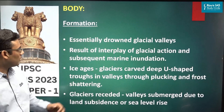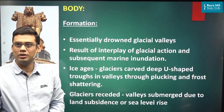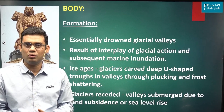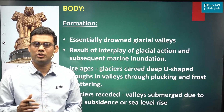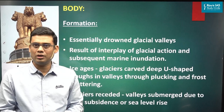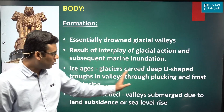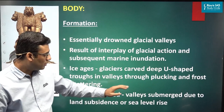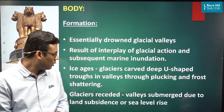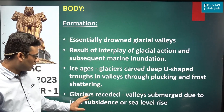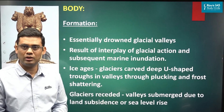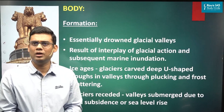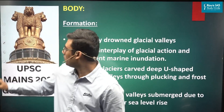In our answer, we will write that fjords are essentially drowned glacial valleys resulting from the interplay of glacial action and marine inundation. Glacial action first created the U-shaped glacial trough through processes of plucking and frost shattering during the last ice age. After that, when the glaciers receded, the valleys submerged due to land subsidence or sea level rise, both resulting in marine inundation.